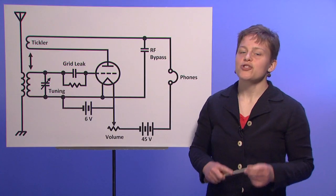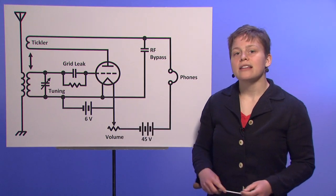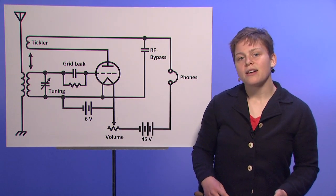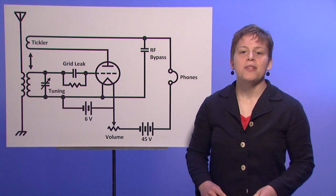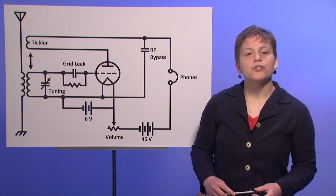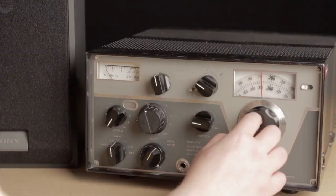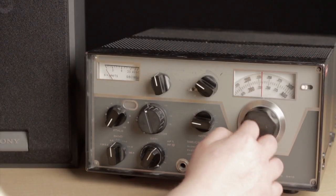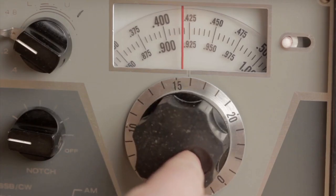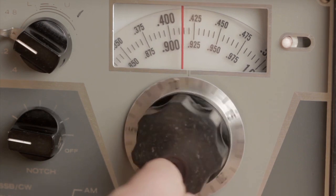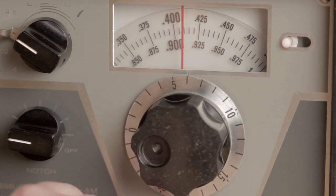It was extremely clever to use a single tube to amplify, provide selectivity, and demodulate an AM signal at a time when tubes were very expensive and considered cutting edge. This Drake R4 radio uses more sophisticated circuitry, but even modern radio receivers are built with digital circuits that operate on the same basic principles.